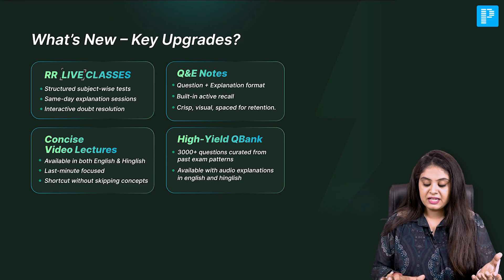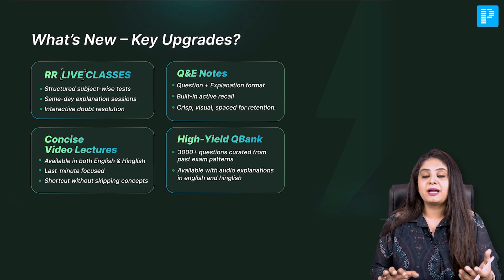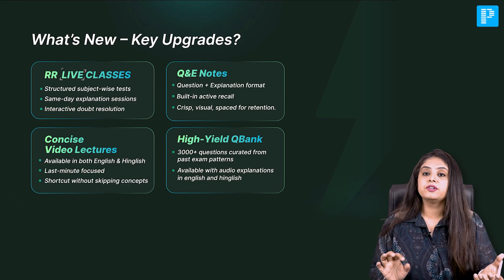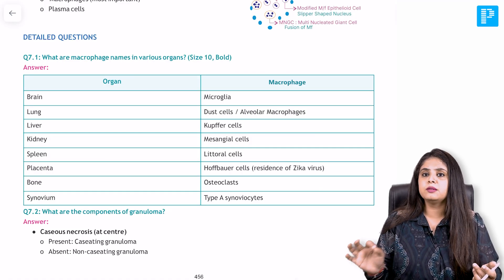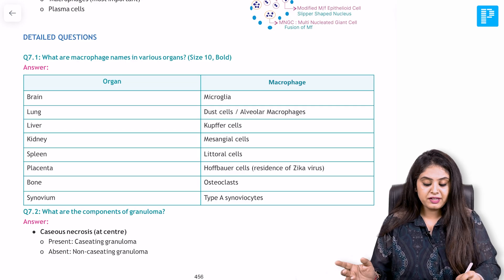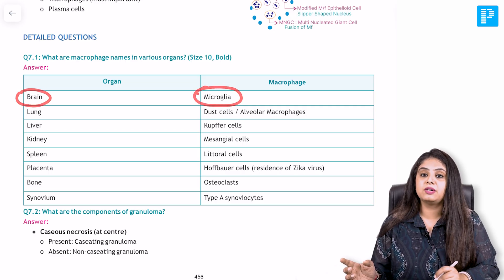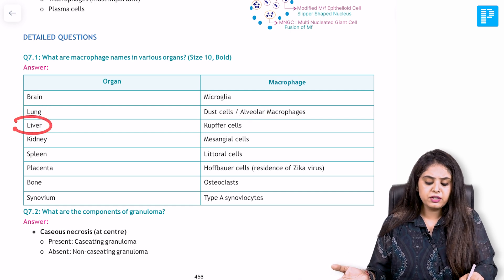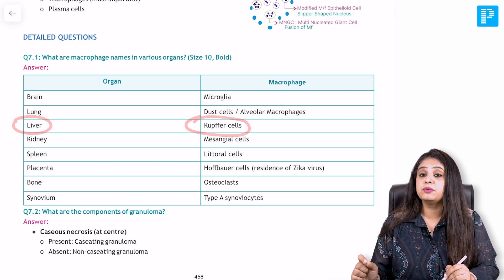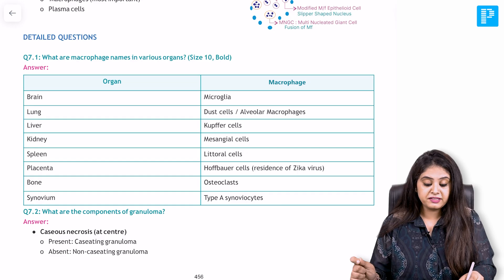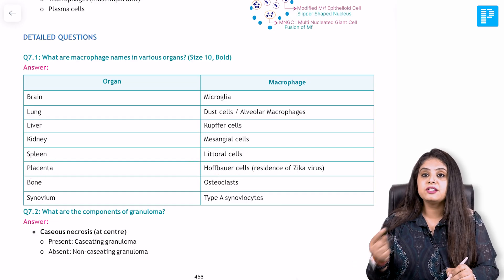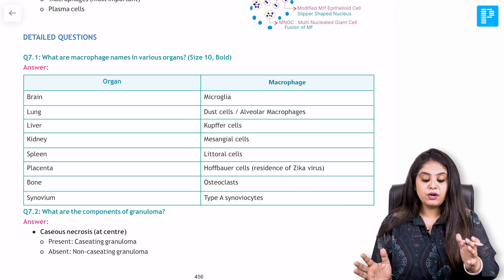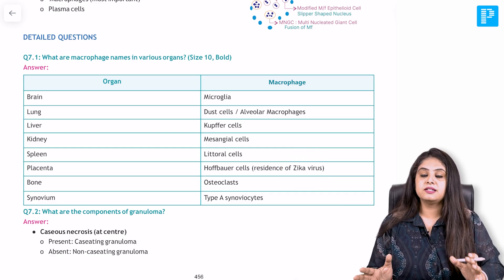Let's assume I want to revise macrophages and what they are known as in different parts of the body. All of that has been put in the inflammation chapter in a tabular manner. For example, macrophages in the brain are referred to as microglia; in the lungs, as alveolar macrophages or dust cells; in the liver, as Kupffer cells. You also get a question on placental macrophages, known as Hofbauer cells, and as a path-micro integration, that's the site where the Zika virus attacks. All these volatile facts are now in a tabular manner.